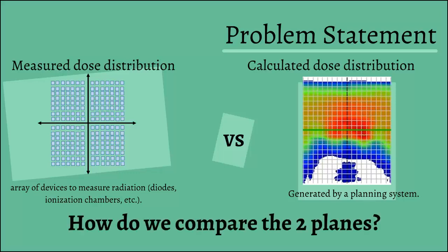The calculated dose distribution is a plane dose that's generated by a planning system. Our question now is, how do we compare the two dose planes?